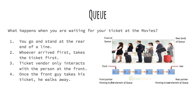Many a times, queues are used to ensure fairness. This is suitable when all of the people have equal importance and everybody takes limited and almost equal time. Imagine you have gone to watch a movie — how do you purchase your tickets? You stand in a queue.